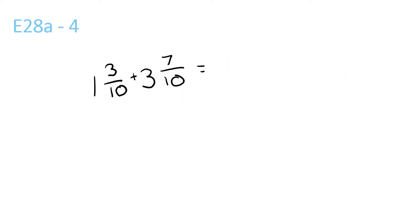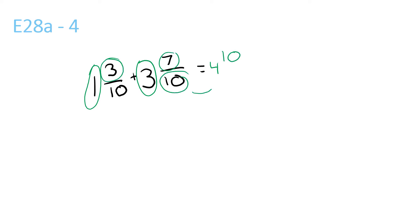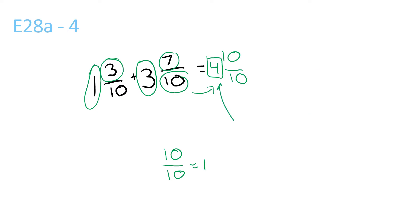For this one, first we're going to add this number and this number, which is 4. Then we add the top ones, 3 and 7, which is 10. Then we bring this one over — 10 over 10 is just the same as 1. And don't forget the 4 here. So it's basically 4 here, plus this 1, which is 5. So the answer is just 5.